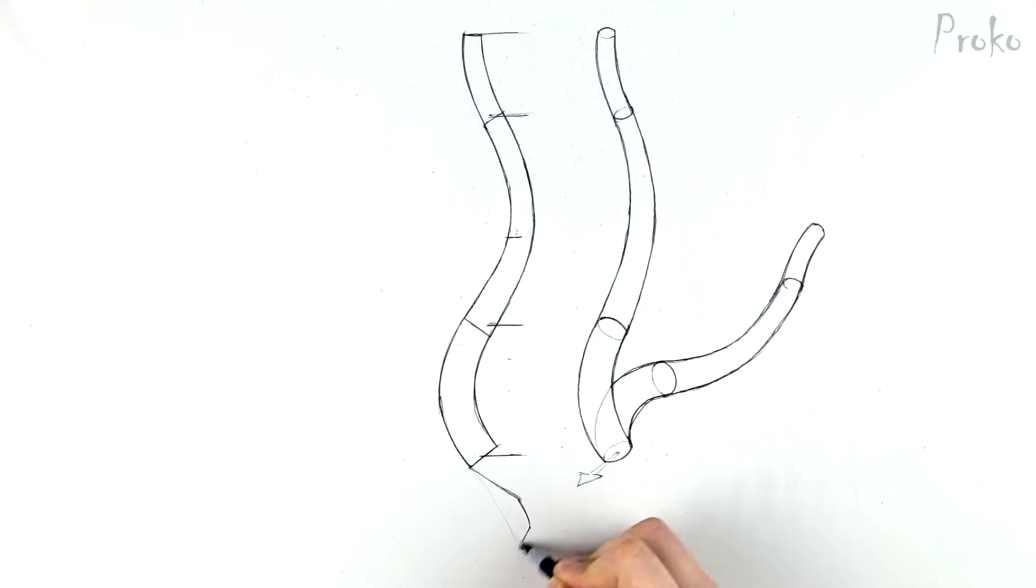Since the ribcage has the opposite tilt, the torso has this curvature in the neutral position. The sacrum is very curvy.